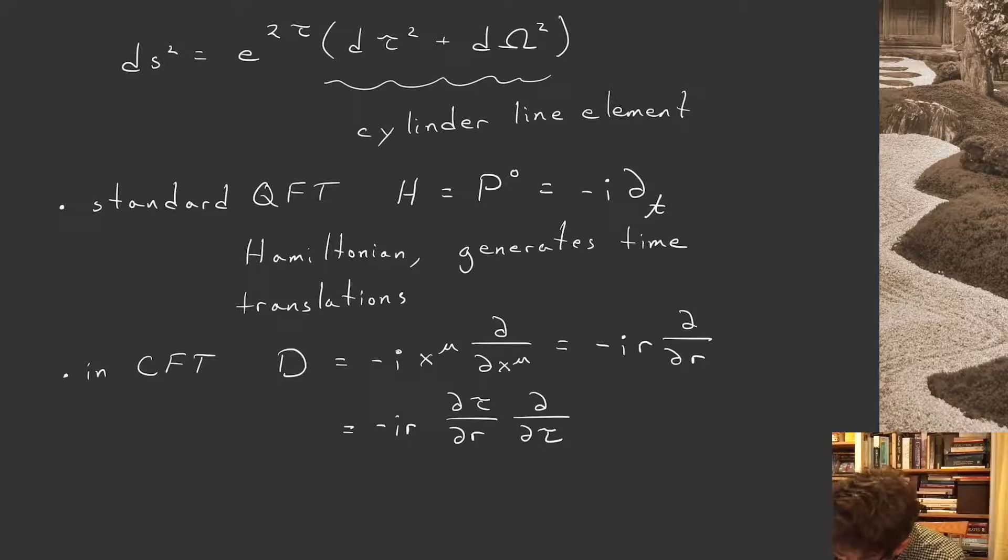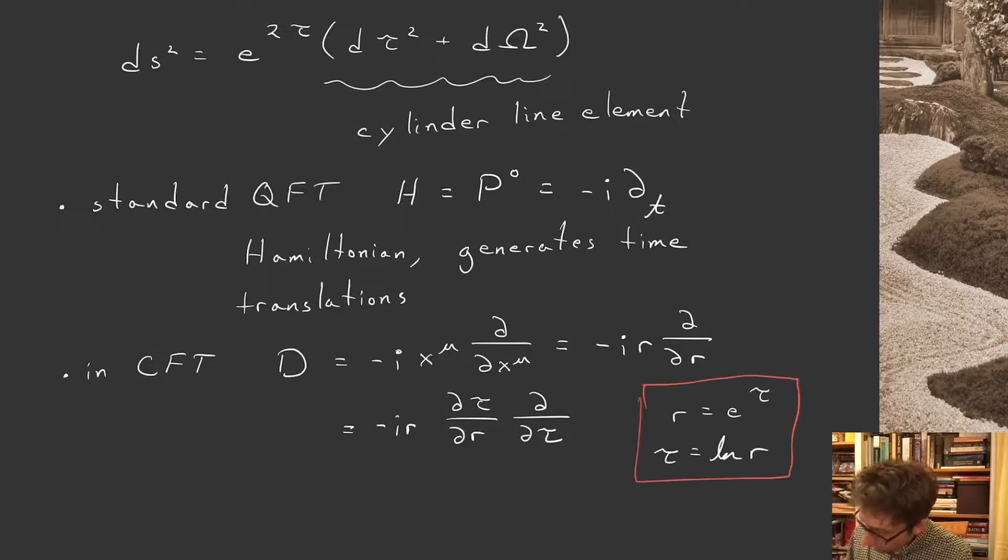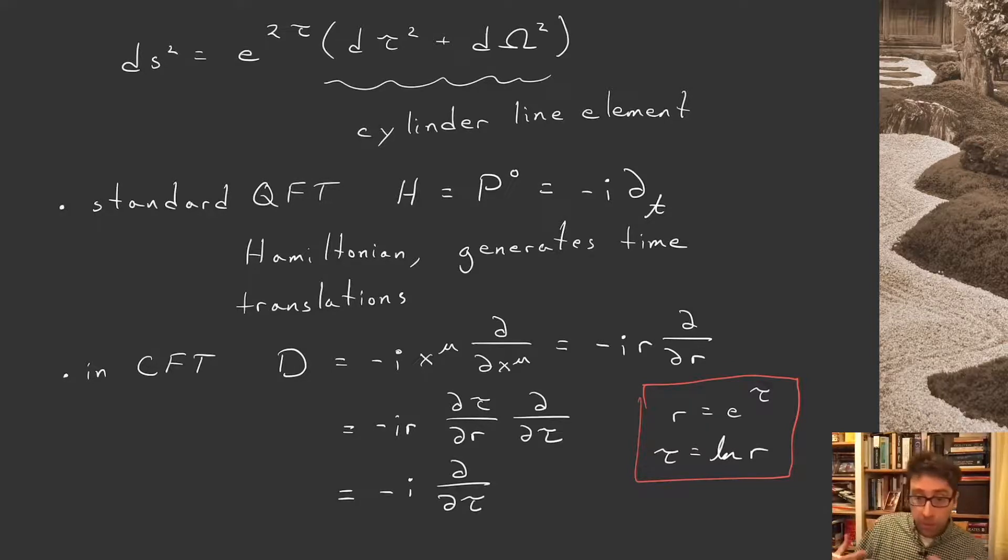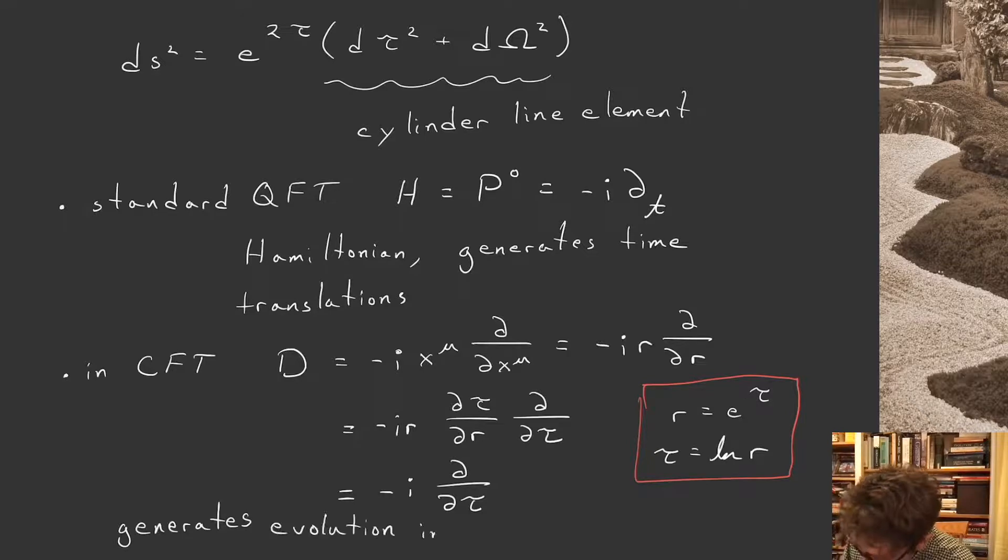And remember, what is τ? r is e^τ, and so τ equals log r. So if I go and take a derivative now with respect to τ, dτ/dr is 1/r. And so what do I find? I find that this is -i∂_τ. And so indeed, with respect to this new coordinate system, I see that D generates evolution in τ, or equivalently in this radial direction.